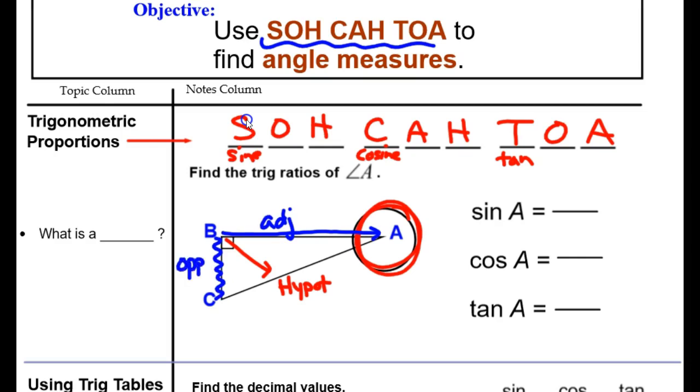When we find the sine, which is opposite over hypotenuse, we pick our opposite side B-C and put it over the hypotenuse A-C. We take our cosine, which is adjacent over hypotenuse, and we put our adjacent side A-B over hypotenuse side A-C.